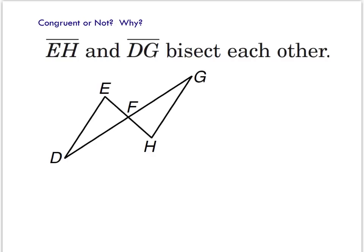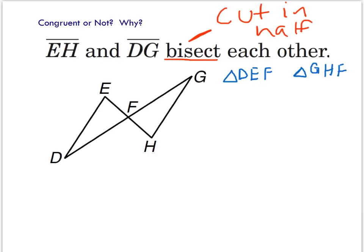Let's try another example. What about these triangles? Let's name them: triangle DEF and triangle GHF. What does it mean for two segments to bisect each other? Bisect means cut in half, so each segment is cutting the other one in half. EH bisects DG, meaning DG is cut into two equal parts. And since they bisect each other, DG also bisects EH, cutting it right in half. So I have two pairs of congruent segments from this fact.